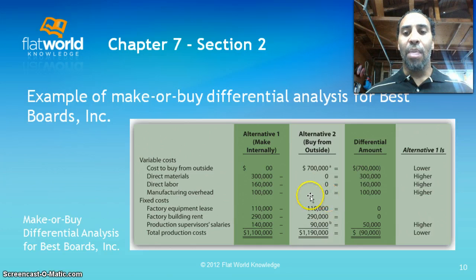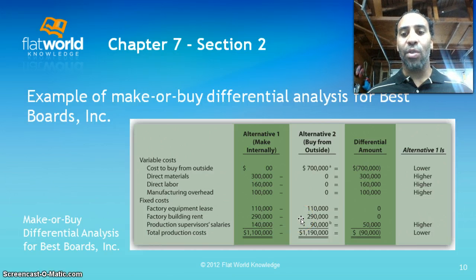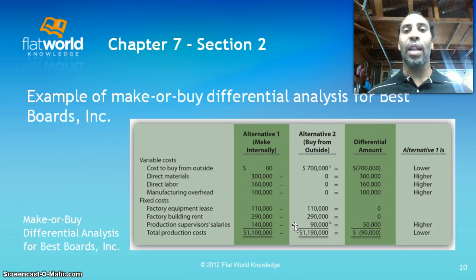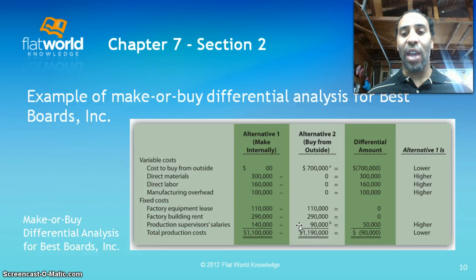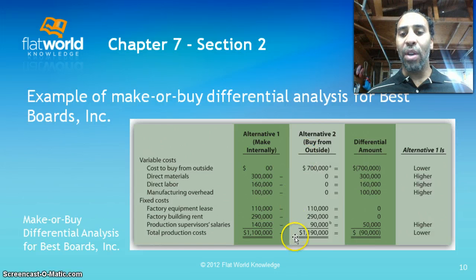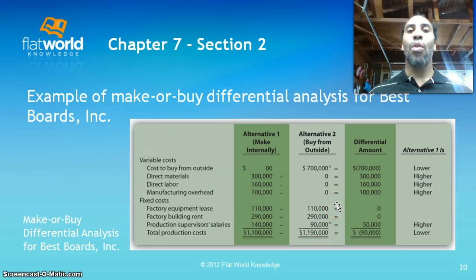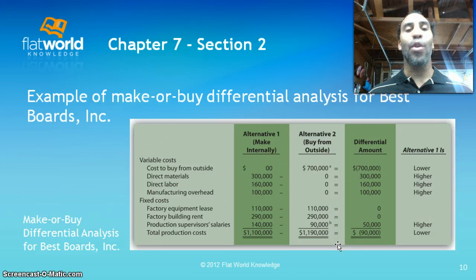But here's the key difference — some fixed costs remain. The $110,000 factory equipment lease remains, and the $290,000 factory building rent remains. You'll save on one production supervisor's $50,000 salary by laying them off, but the other production supervisor has a $90,000 long-term contract so you can't eliminate that. Total production cost is $1,100,000 to make internally versus $1,190,000 to buy from outside — a $90,000 loss — so outsourcing is not a viable decision.